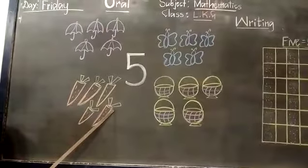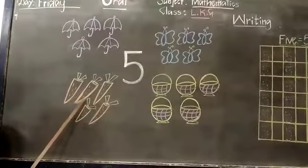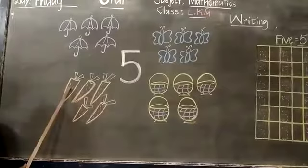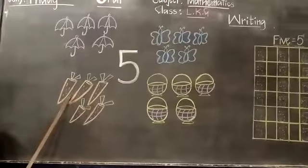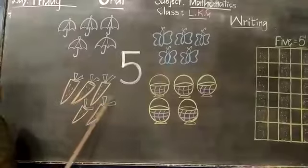How many carrots are there children? There are 5 carrots. 1, 2, 3, 4, 5. 5 carrots. Good. Next.